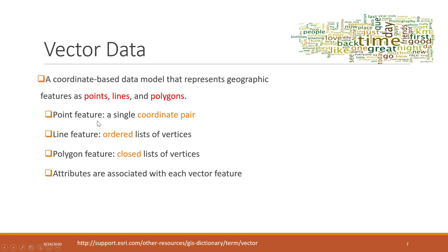Each feature can have multiple attributes associated with it. Specifically, a point is a single coordinate pair — we know the x and y coordinates of this point. That is the spatial information. We can also store non-spatial information, such as attributes like the name of the point. A point can represent a building, a check-in on social media, a car, or any object you want to represent in GIS.